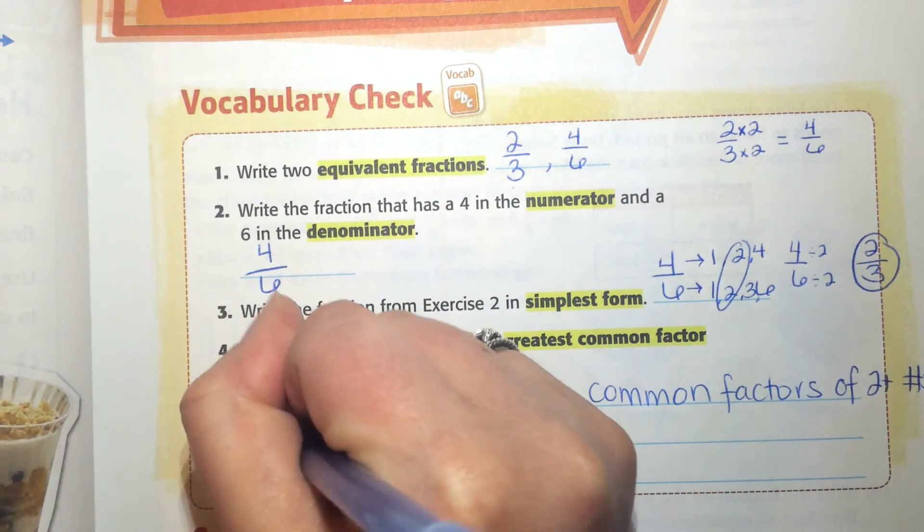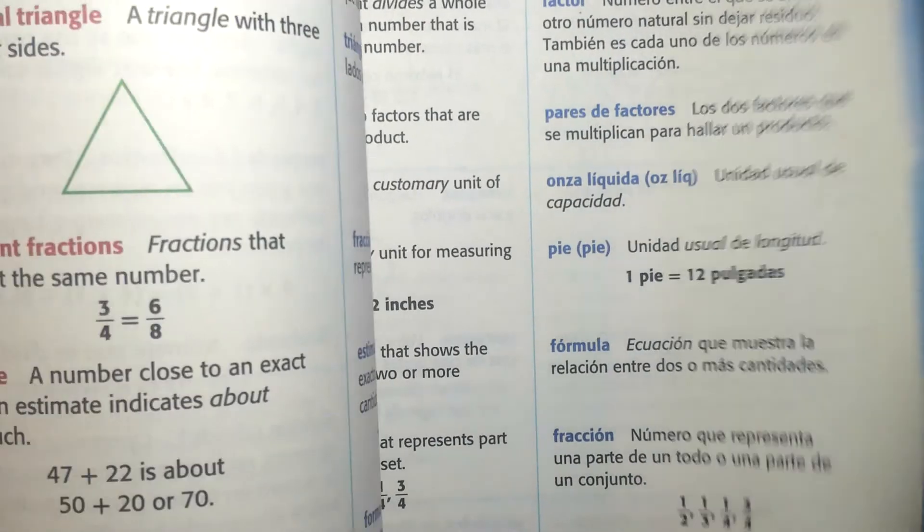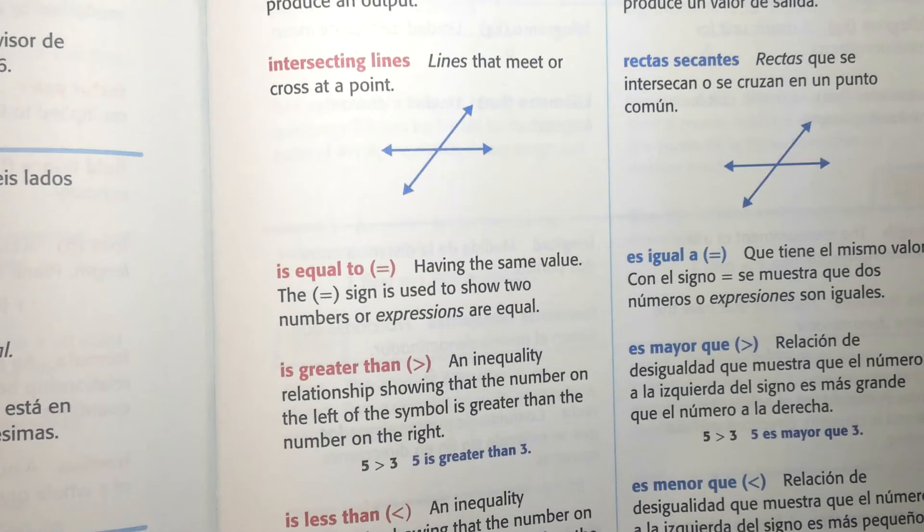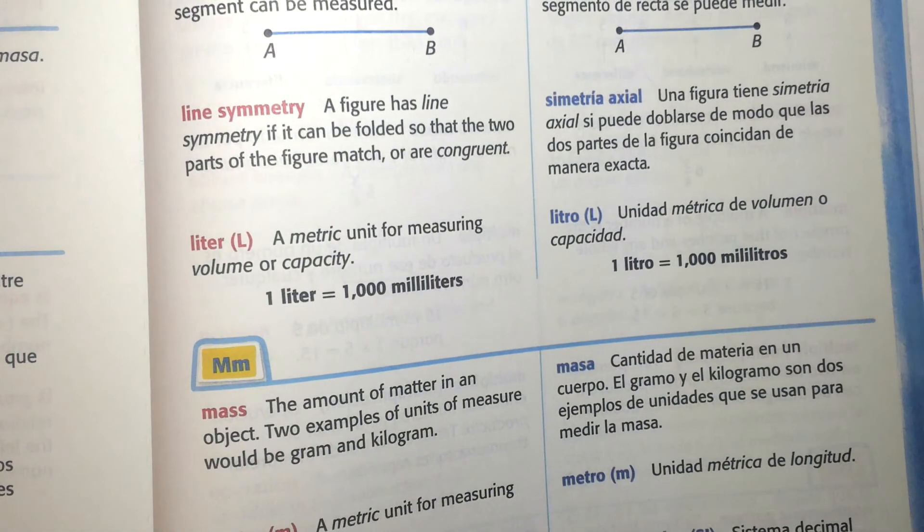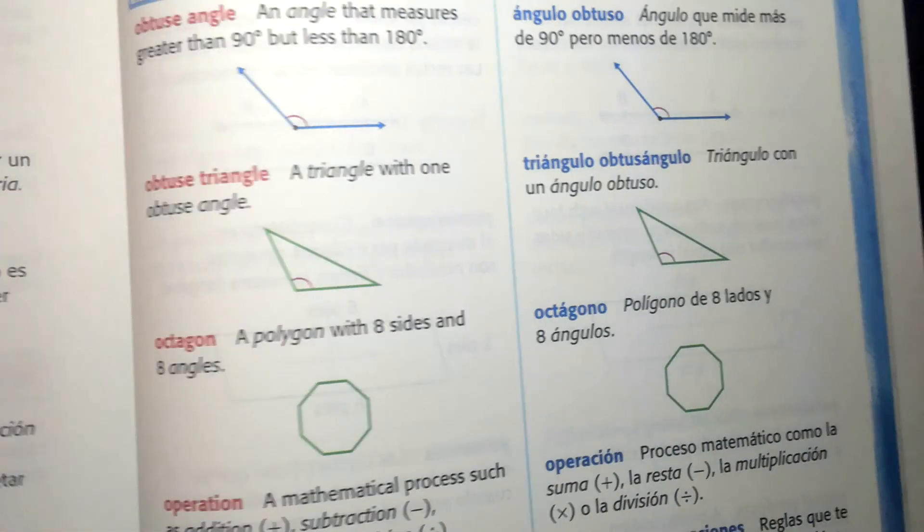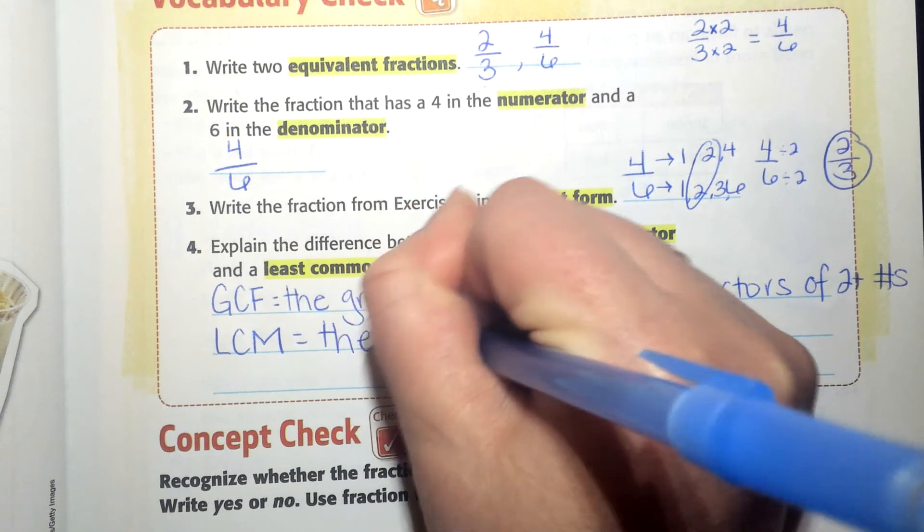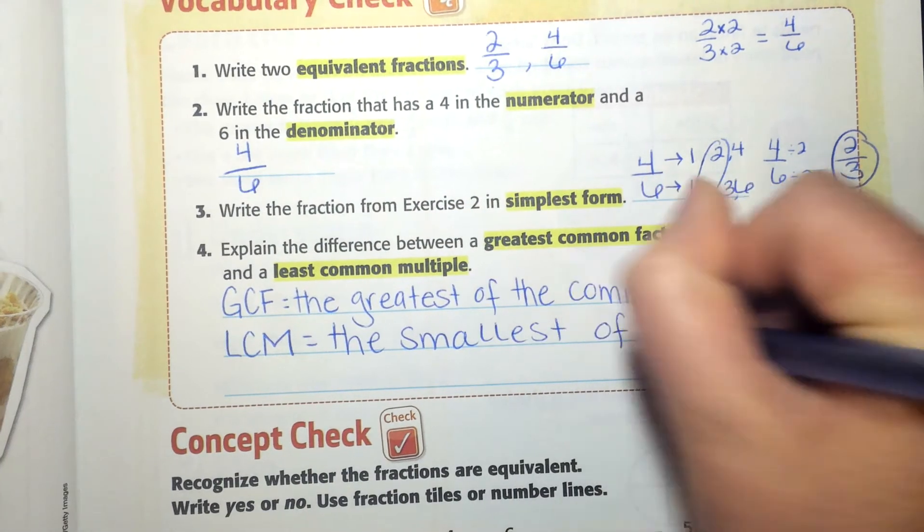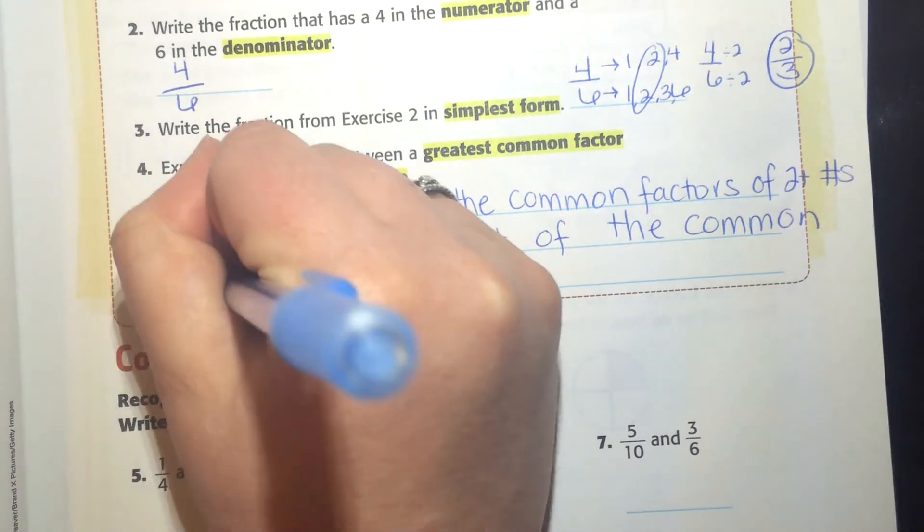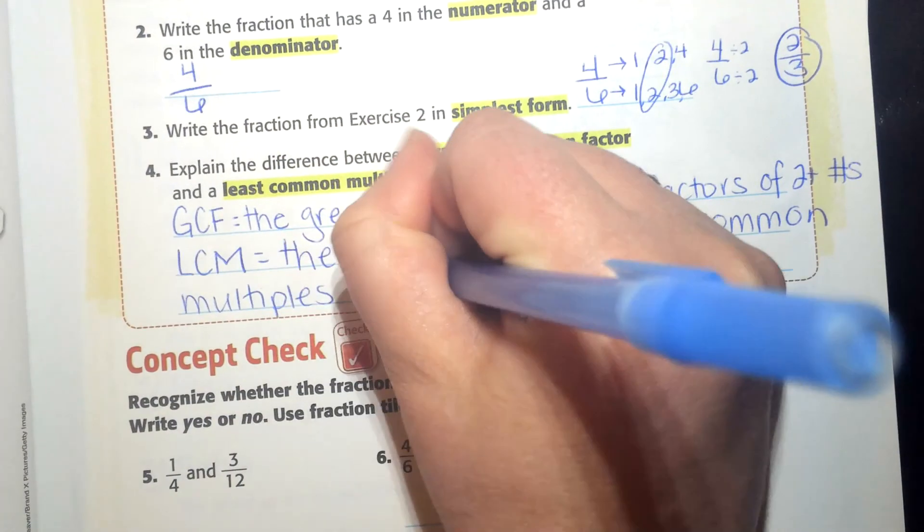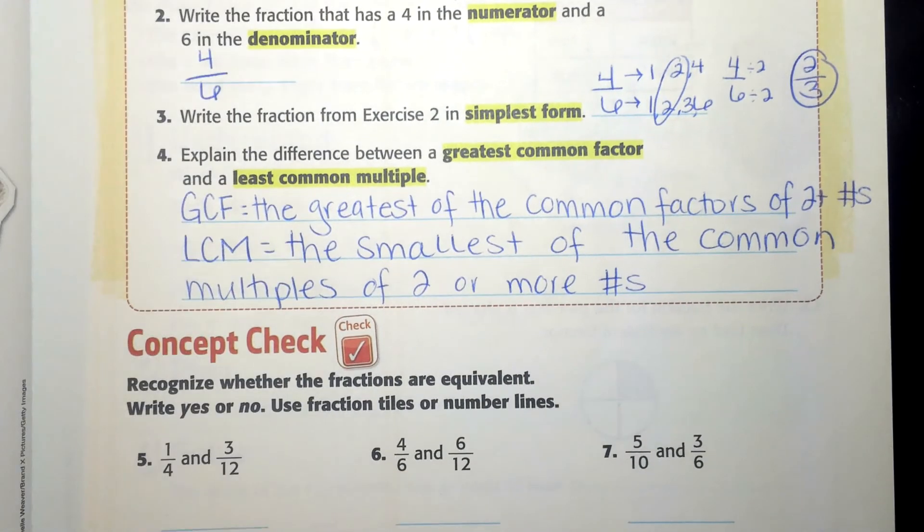Least common multiple or LCM for short. I'm going to go to my glossary, find L. And how funny, it's not here. Well, that doesn't help me. So the least common multiple is the smallest multiple of two or more numbers. If you need to pause this video to copy that, you can now.